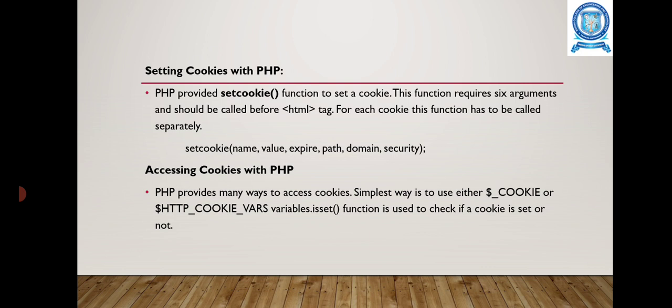Path specifies the directories for which cookie is valid. Domain can be used to specify the domain name. In very large domains, it must contain at least two periods to be valid. Security can be set to one to specify that the cookie should only be sent by secure transmission using HTTPS. Otherwise, it is set to zero, which means the cookie is sent by regular HTTP.